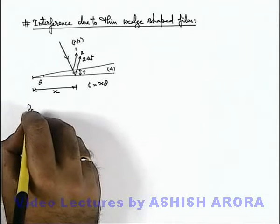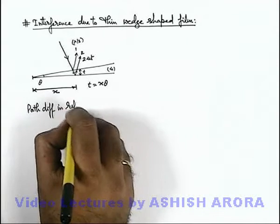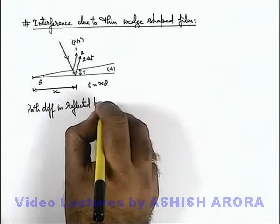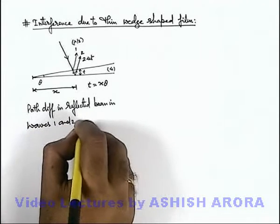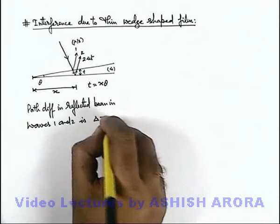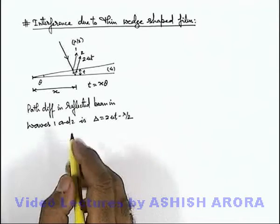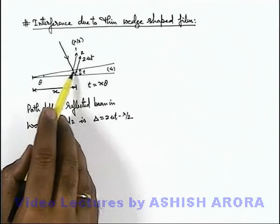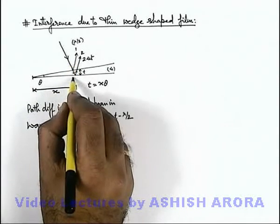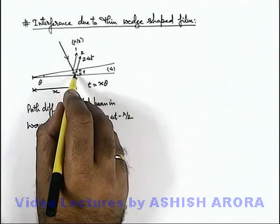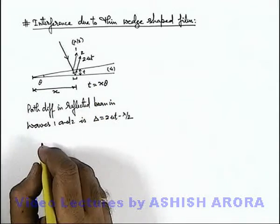In this situation, if we calculate the path difference in the reflected beams — waves 1 and 2 — this delta can be written as 2 mu t minus lambda by 2. At a particular thickness, everywhere the reflected light has the same path difference, so the light intensity within the whole depth of the film remains the same and a fringe is produced.